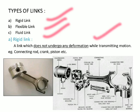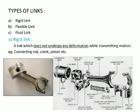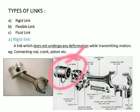Examples of rigid links include a connecting rod, a crank, and a piston. You can see the arrangement here — the pistons, the connecting rod, the piston ring, and the compression ring are all shown. These components transmit motion without deformation, making them rigid links.